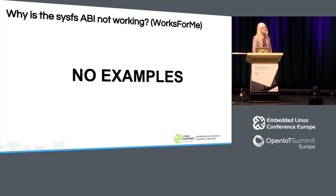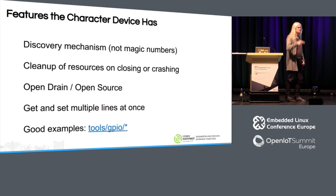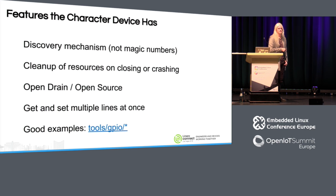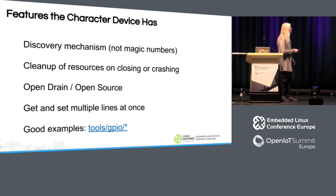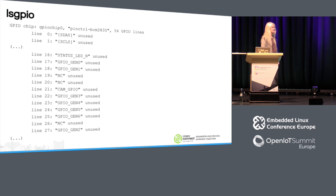SysFS also involves compulsory string parsing on context switch from kernel space to user space — parsing a zero or one. The character device has a discovery mechanism based on strings — you can look up GPIOs in user space by their name. You can also hard-code an offset on a specific GPIO chip. It cleans up resources when you close or crash — close the character device, everything is cleaned up, and the GPIOs are available for the next client. It supports open drain and open source, which I will not add to the SysFS ABI — forget it, it's obsolete. You can get and set multiple lines at once, and if the driver supports it, write several lines with a single register write.